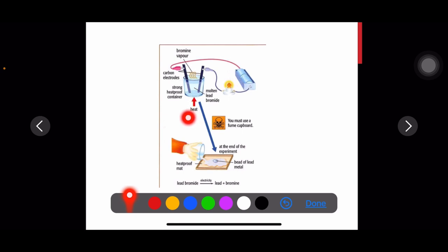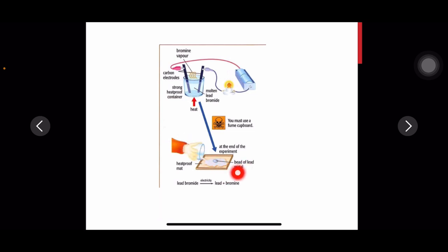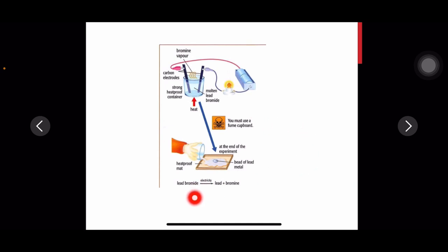This point is important: sometimes in past papers, you will see a picture where they ask you for the missing component — it will be the heat source. The electrolysis produces bromine vapours at the anode and beads of lead metal at the cathode. This process is done in a fume cupboard because bromine gas vapours are toxic. Lead bromide is decomposed by electricity into lead and bromine.